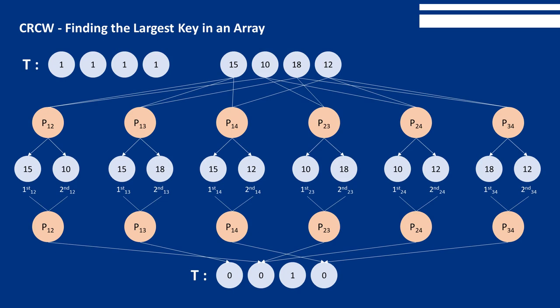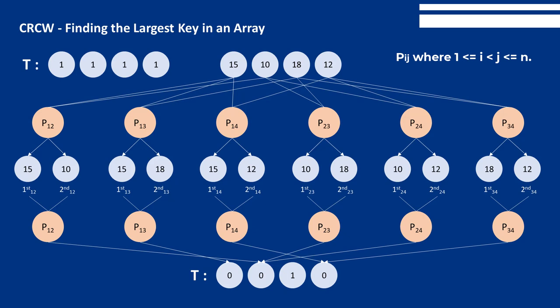The algorithm proceeds as follows. Let the n keys be in an array S in shared memory. Maintain a second array T of n integers in shared memory and initialize all elements in T to 1. Next, we assume we have n(n-1)/2 processors indexed as P_ij, where 1 ≤ i < j ≤ n. In parallel, all processors compare S[i] with S[j], so every element in S is compared with every other element.